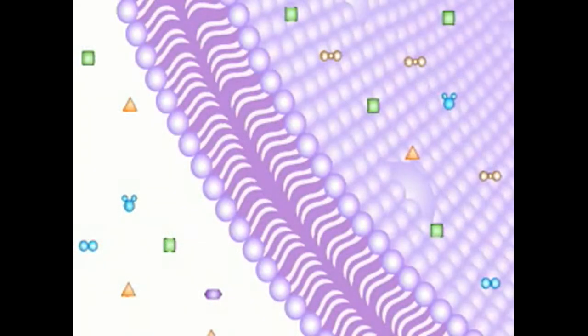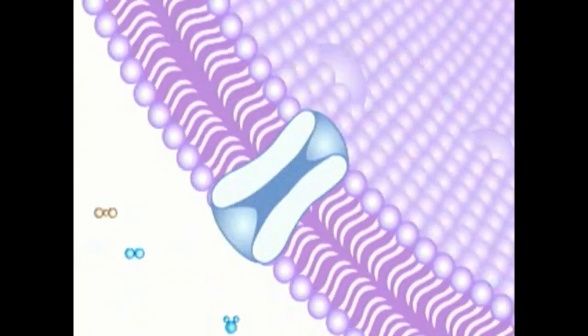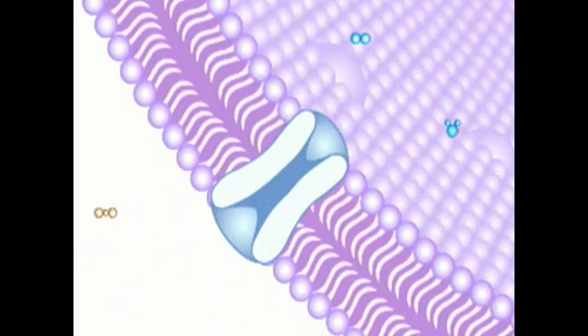The cell membrane is selectively permeable, restricting the flow of traffic into and out of the cell to specific molecules. It in essence acts as a gatekeeper.